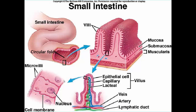Surface area is further increased by microvilli. On each columnar cell you can see microscopic finger-like projections where the cell membrane bends back and forth to create these microvilli. So we have circular folds, villi, and microvilli — all increasing the surface area of the small intestine. If you laid the small intestine out flat and spread out all the folds, villi, and microvilli, it would cover the same area as a tennis court.